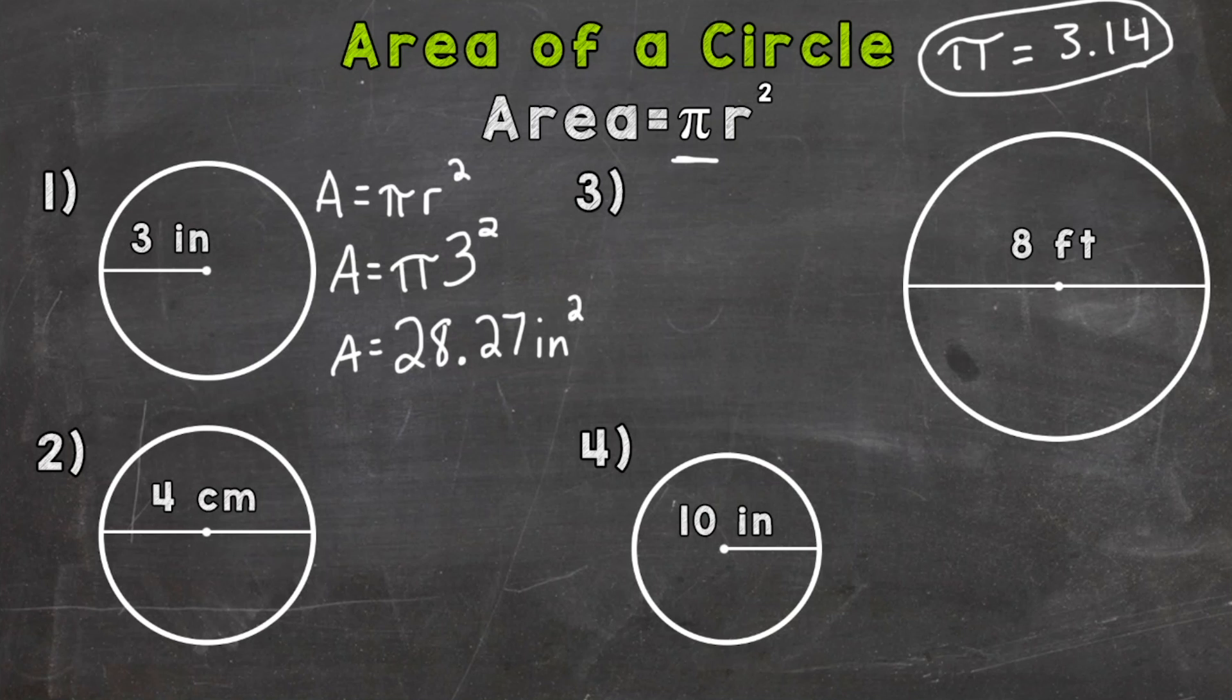So let's try number two. It's always good habit to write your formula out first whenever you're using one whether it's area or a different type of problem. So we have area equals pi times radius squared. So let's plug in. So we have our pi.